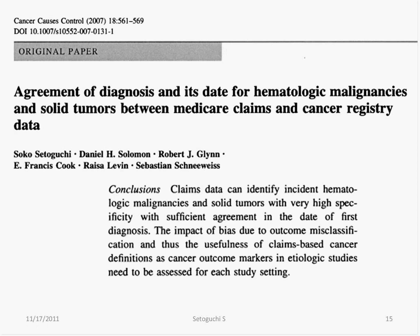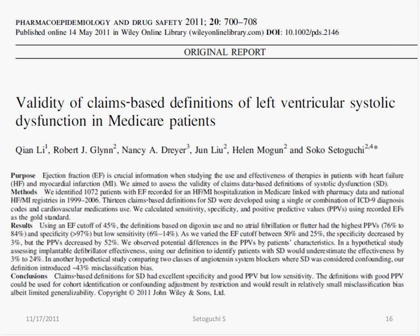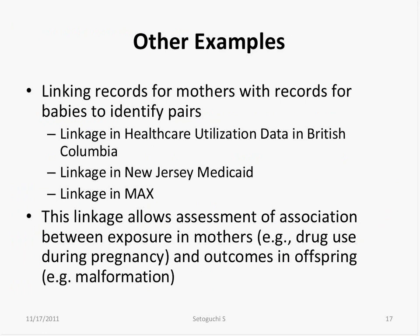Another example is linking databases to validate information. I linked the cancer registry to Medicare data, developed linked definitions of cancers, and validated them using cancer information from the registry. Similarly, I linked the heart failure registry to Medicare data to develop and validate definitions for left ventricular systolic dysfunction — which doesn't exist in Medicare data — using ejection fraction information in the registry. We can also link persons to their children, as we did linking mothers to babies to assess exposures in mothers and outcomes in offspring.